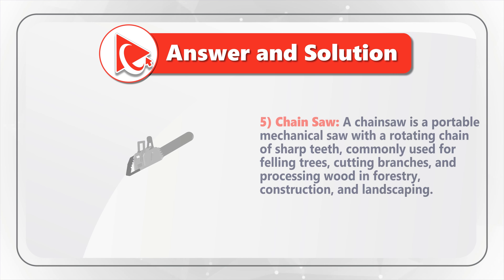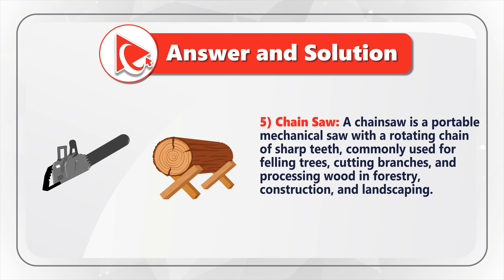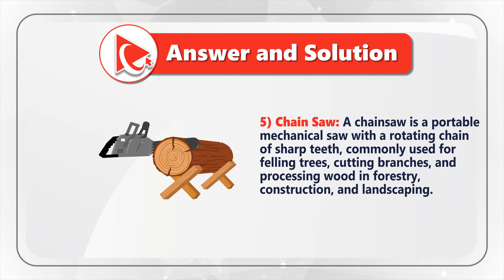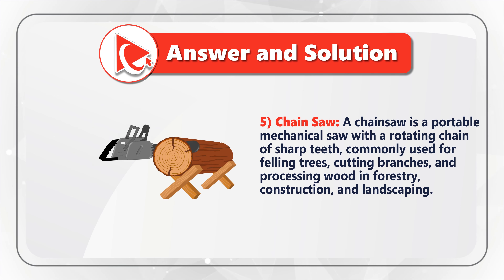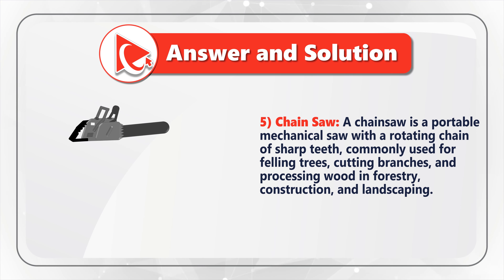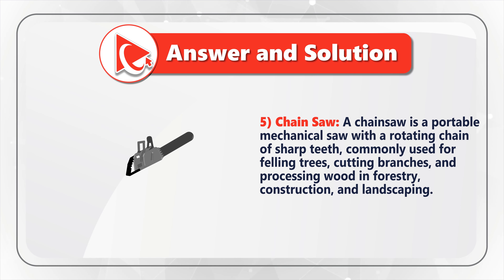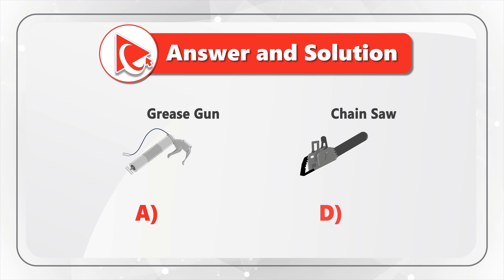Choice four is a grease gun — a handheld device designed for applying lubricating grease to machinery, gears, or bearings to reduce friction and maintain proper functioning. And last but not least, description five resembles a chainsaw — a portable mechanical saw with a rotating chain of sharp teeth, commonly used for felling trees, cutting branches, and processing wood in forestry, construction, or landscaping. You can see the grease gun matching image A and the chainsaw matching image D.